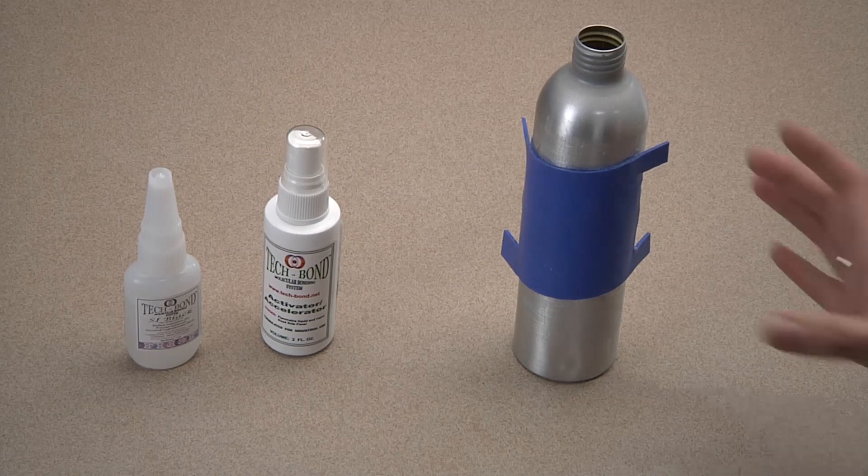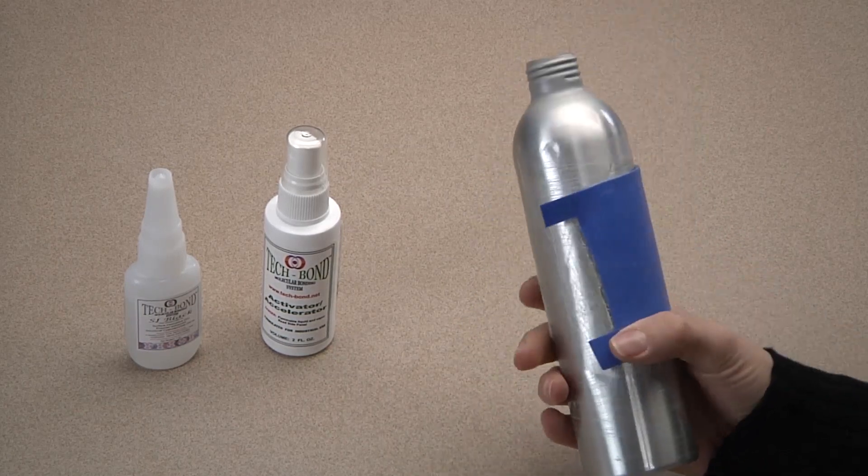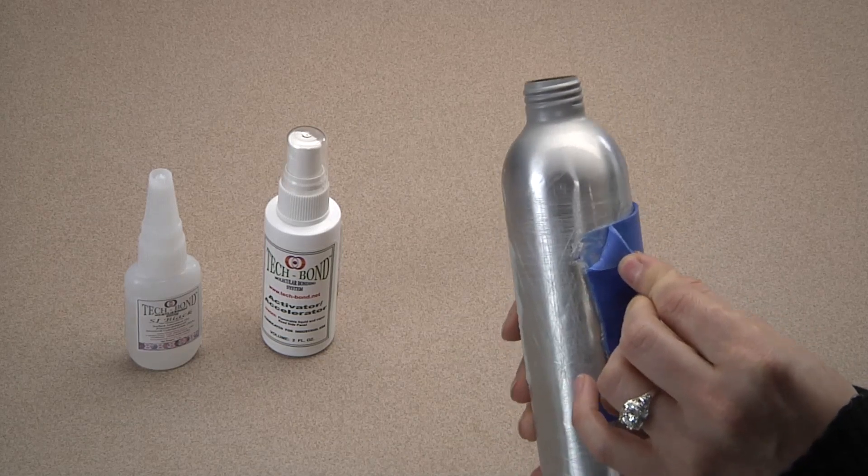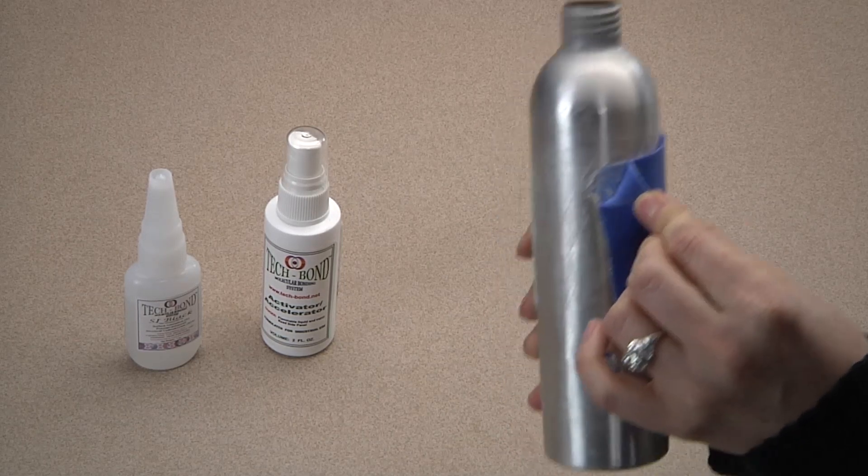I have here an S patch on this aluminum can, which has been on for months. As you can see, the patch is ripping rather than peeling, but the adhesive bond is still intact.